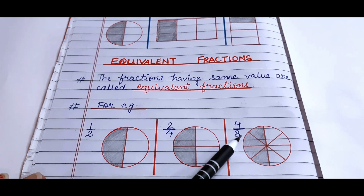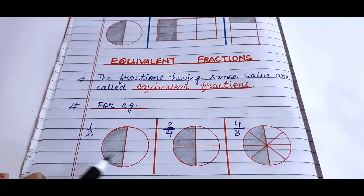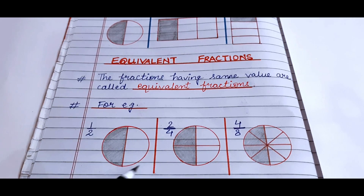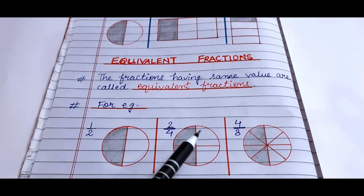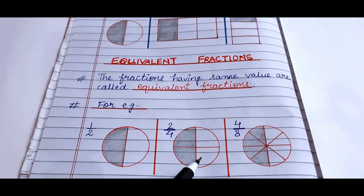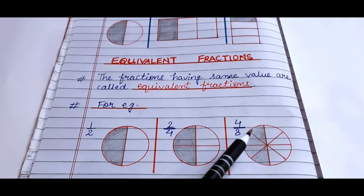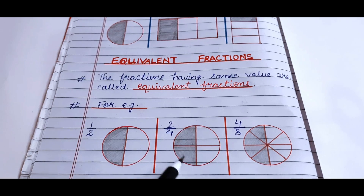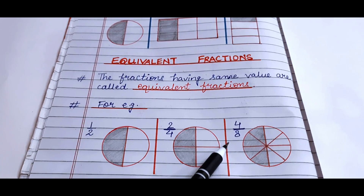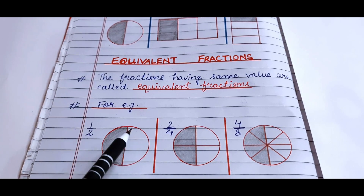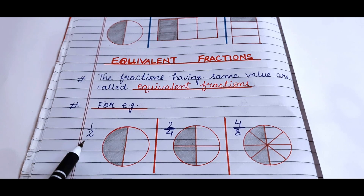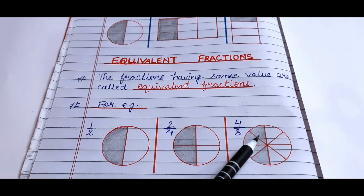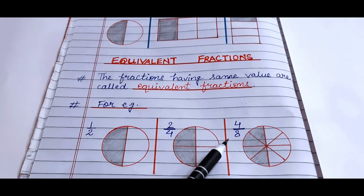You might say these are not the same numbers, but see the concept. Here we have three circles of the same size. The first circle is divided into 2 equal parts, the second into 4 equal parts, and the third into 8 equal parts. Out of the first circle, 1 out of 2 is shaded — so 1 by 2. In the second, 2 out of 4 are shaded — so 2 by 4. In the third, 4 parts are shaded out of 8 parts — so 4 upon 8.